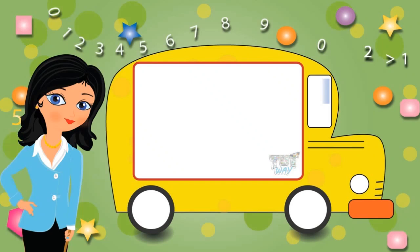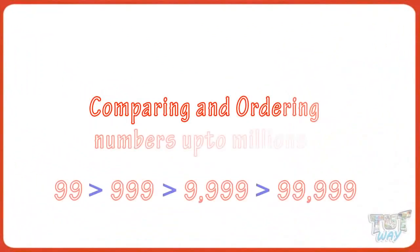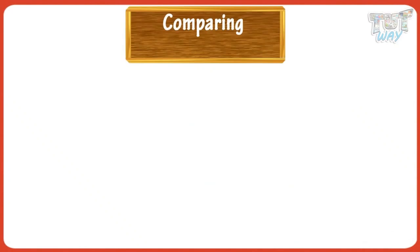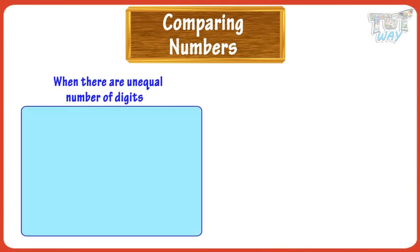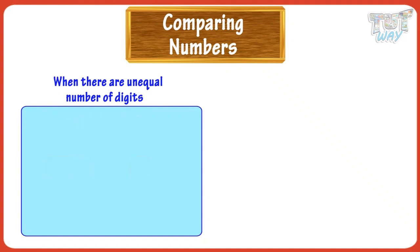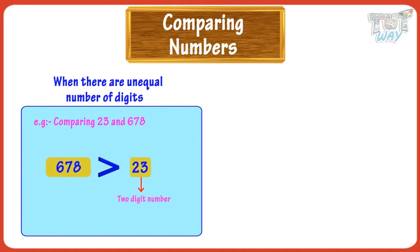Hi kids! Today we will learn comparing and ordering numbers up to millions. Let's first learn how to compare two numbers. There are always two cases in comparing numbers. When the number of digits in two numbers are different, the rule of thumb is that the number with more digits is bigger. For example, 23 is less than 678, as 23 is a two-digit number and 678 is a three-digit number.